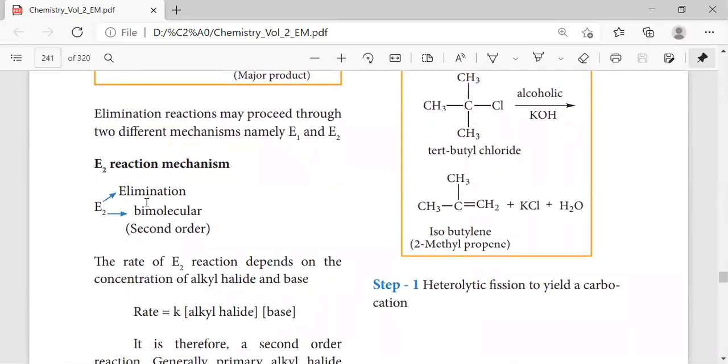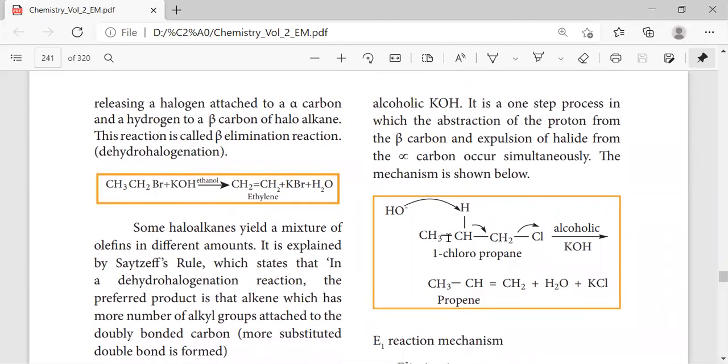This is the bimolecular elimination reaction. Here you see with 1-chloropropane, the chlorine group gets removed and the OH group from KOH attaches so that we get the bond shifting - this bond shifts to this position and it is removed as KCl.